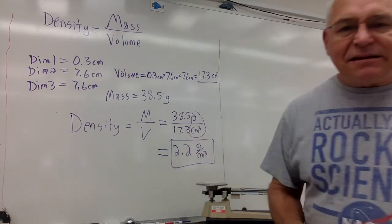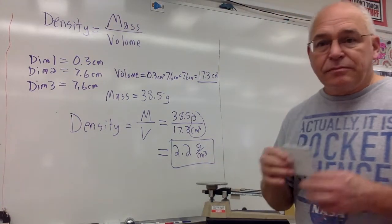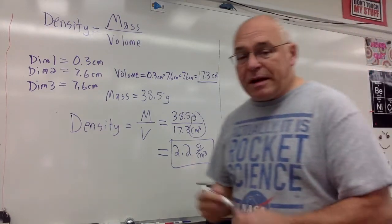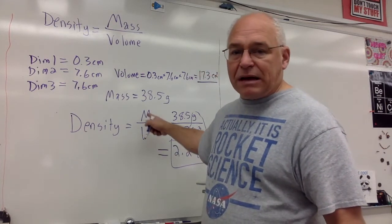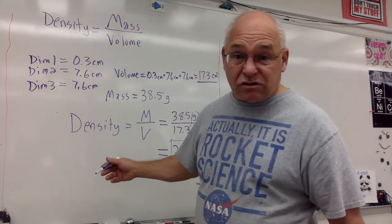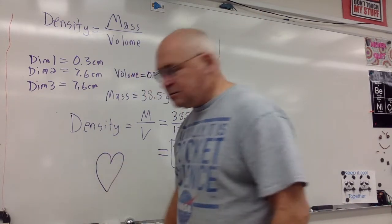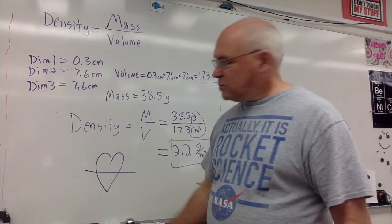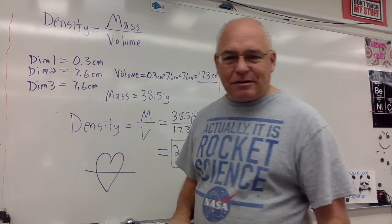Now, if you want help remembering density equals m over v, mass over volume, here's a clever little trick that a student showed me a couple years ago. Make a heart, make a heart, and then cut it in half. What do you get? M on top, v on the bottom. There you go.